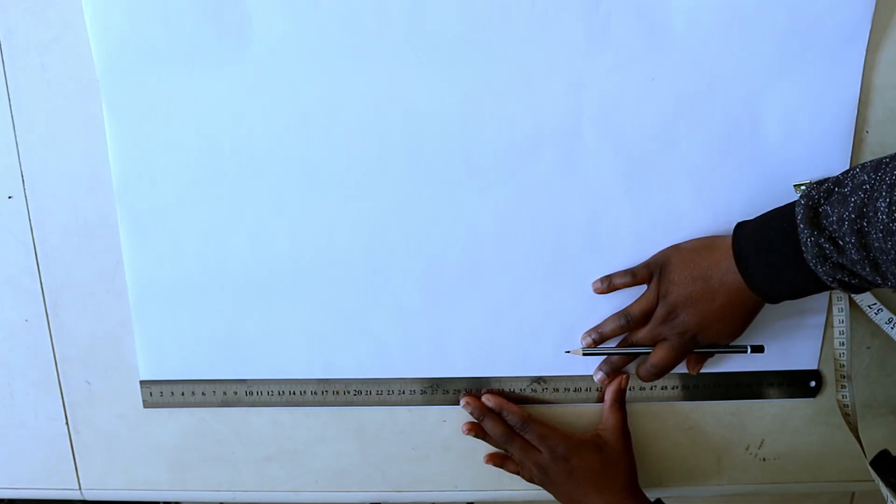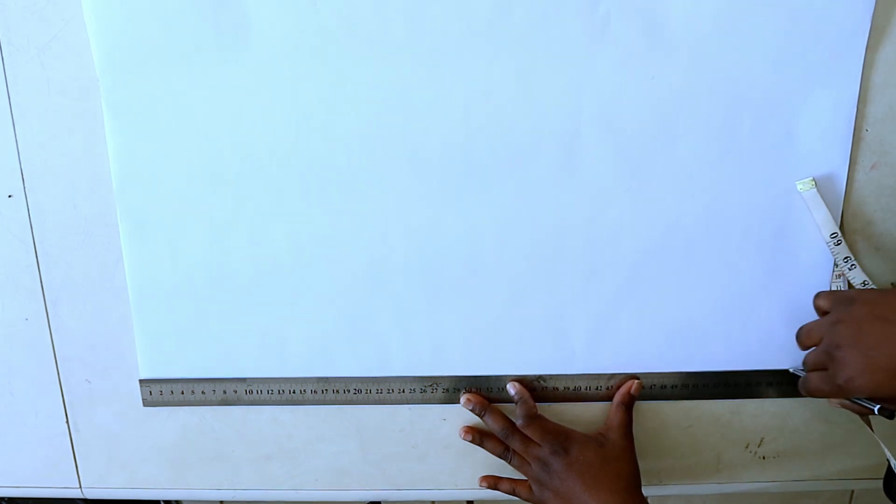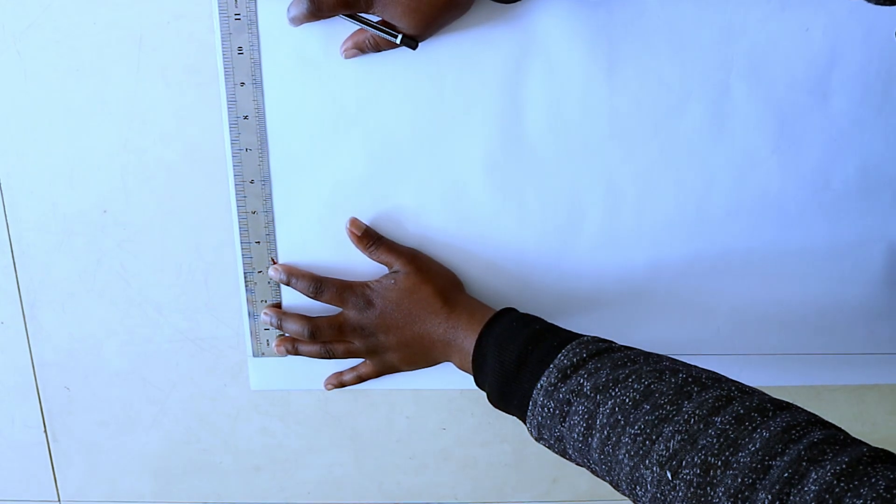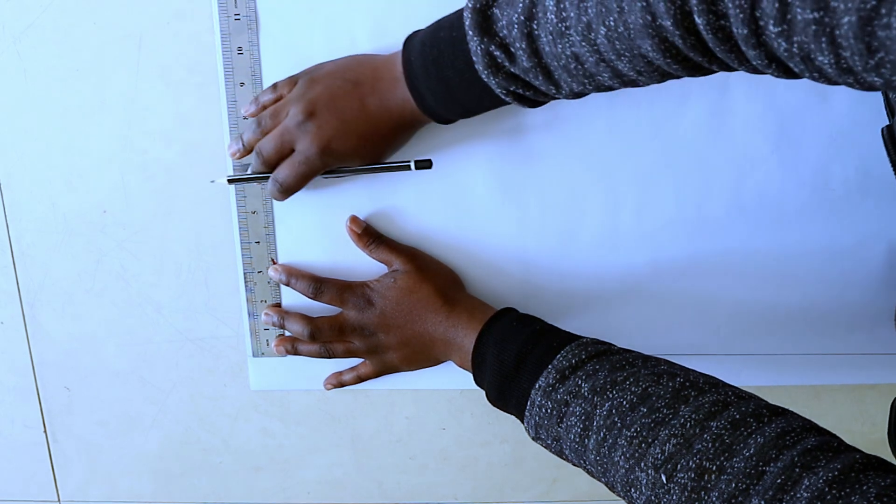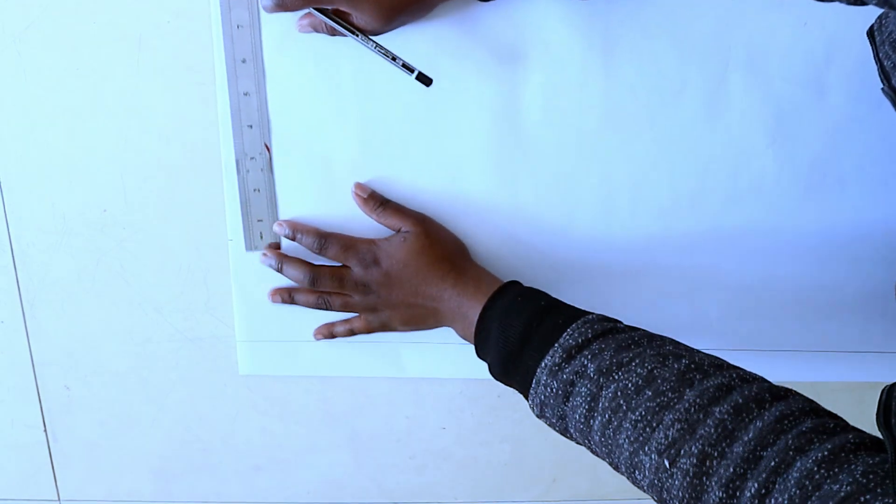To begin making the pattern, I folded my pattern paper in half. Ignore this line I drew at the beginning—I wanted it to be the center front but ended up using the fold line as the center front and the center back line.